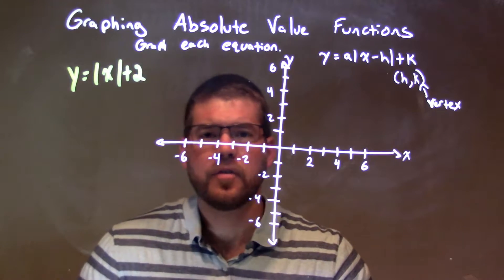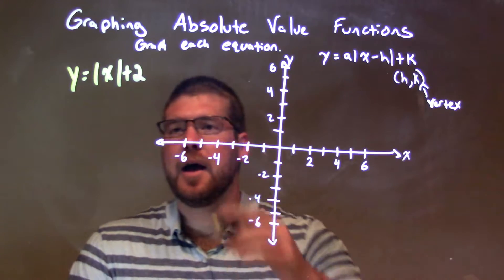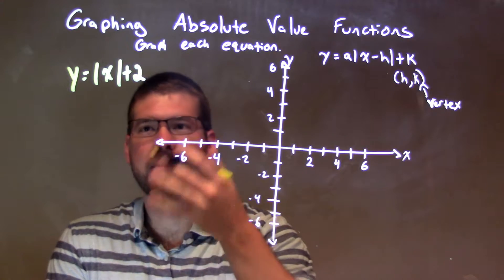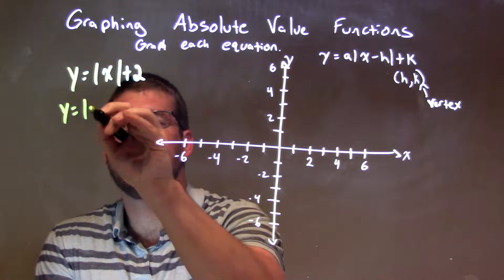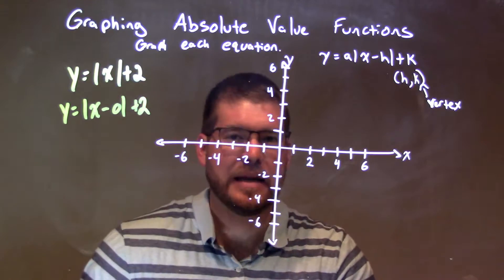All right, well, first thing I want to do is find my vertex. Again, the vertex is just 0,2, and we can see that by k value being 2, but the 0 inside, that's not really written in the absolute value. Now, we could show that here, x minus 0, but eventually, you're going to get better at it and you won't need to do that.